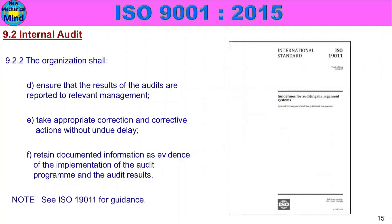Note: see ISO 19011 for guidance — guidelines for auditing management systems. ISO 19011 provides detail on how to conduct audits. This concludes the internal audit section.